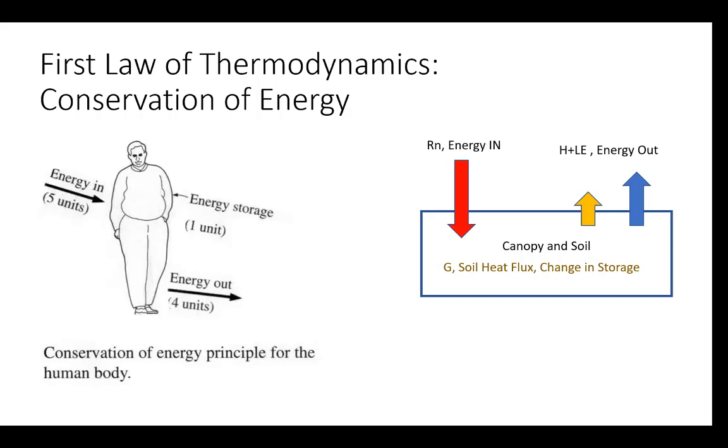That same conservation of energy applies to the field or to vegetation or water or any system in that regard. And that would include, we think of net radiation as mainly our energy into the system. Latent and sensible heat fluxes are ways that energy can leave the system. And then our change in storage is often soil heat storage or what we call soil heat flux. So we'll revisit that idea later. But just this idea that the concept of an energy balance can be applied to almost any system.